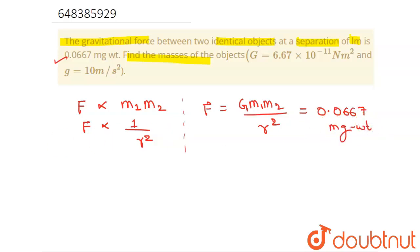Writing this in simplified form, this will be 0.0667 times 10 to the power minus 3 times 10 to the power minus 6 kg weight.